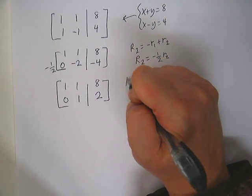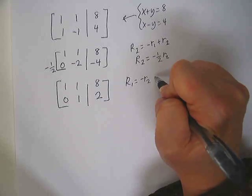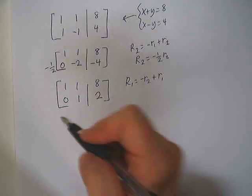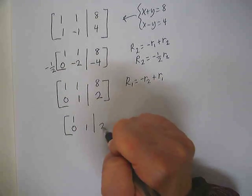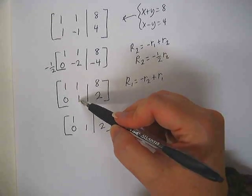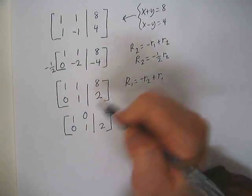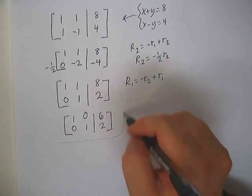Now we want to get a 0 here, so to do that, we're going to create a new row 1 by taking row 2, multiplied by a negative, and adding it to row 1. Okay, so our row 2 is going to stay the same this time. So, negative plus 1 is 1. Negative plus 1 is 0. Negative 2 plus 8 is 6.